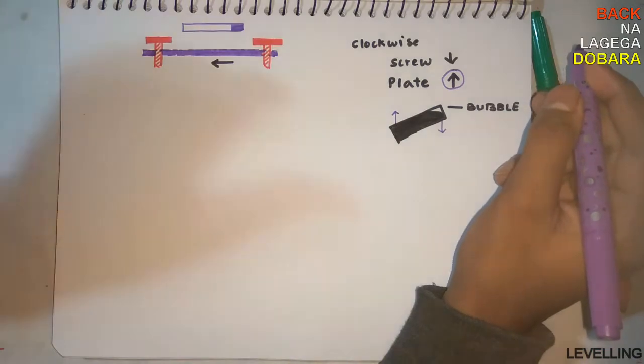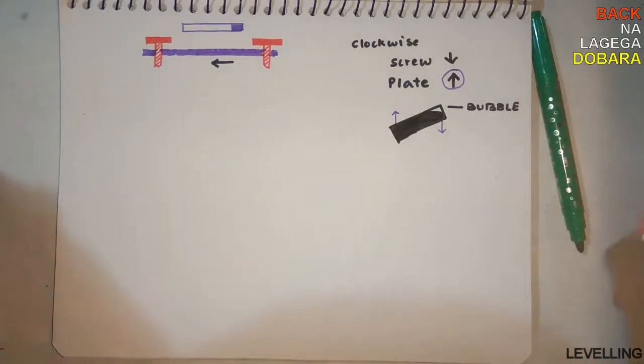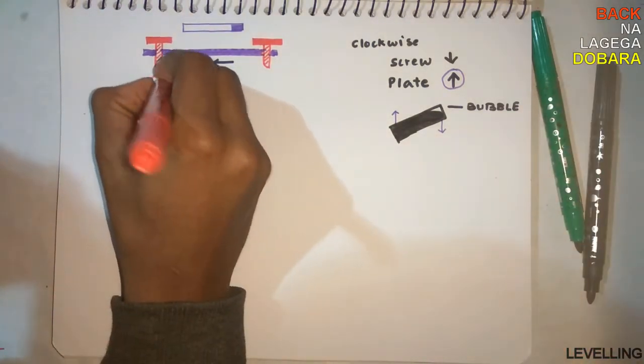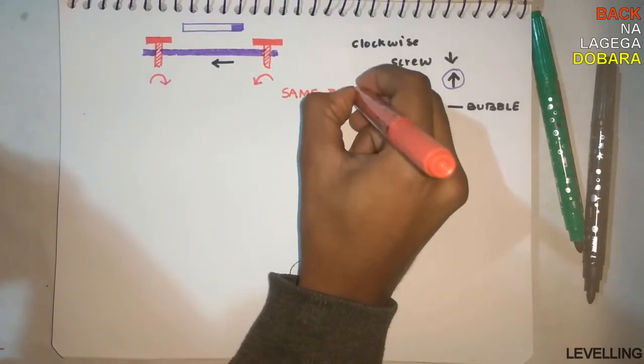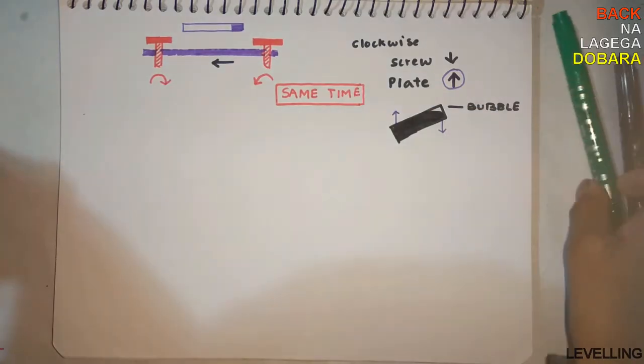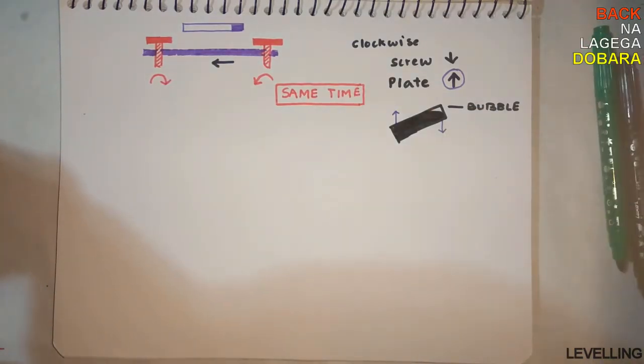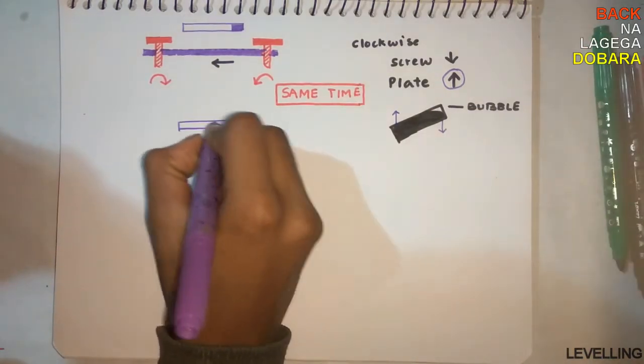Plate up means clockwise, means the left screw should go clockwise. And at the same time, the right should go anticlockwise. Note that these two work in the opposite direction, and the bubble will come at the center.